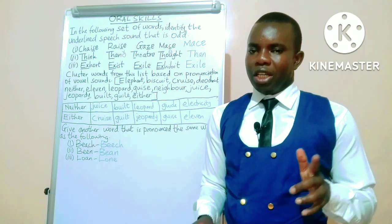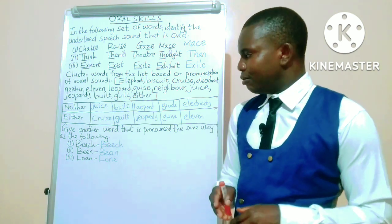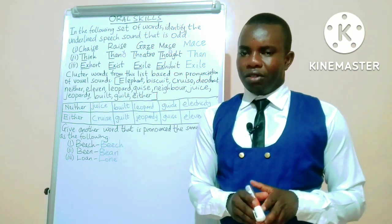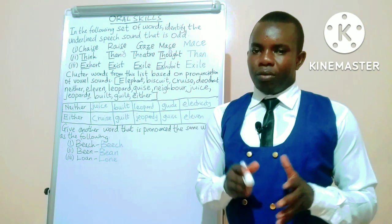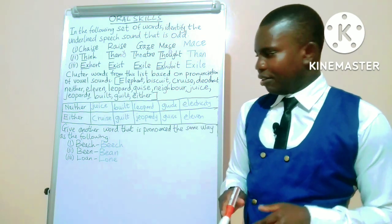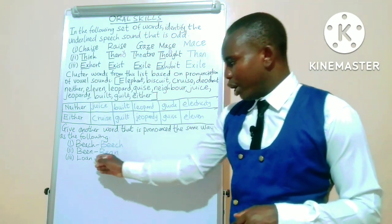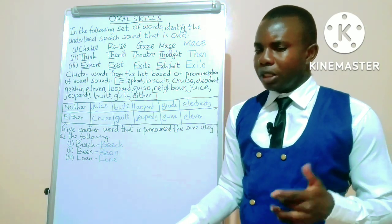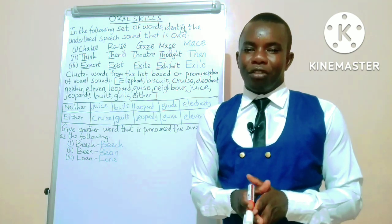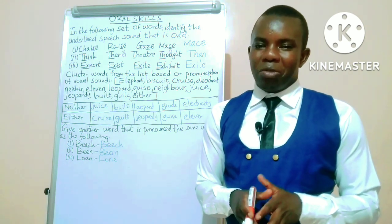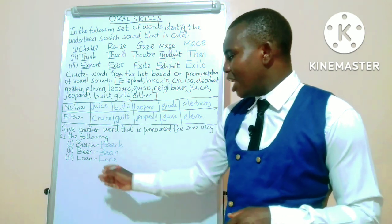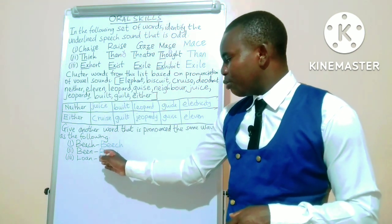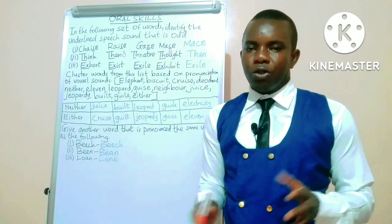We also have the word bean, which is spelled B-E-E-N, and that is pronounced the same as bean, the crop, B-E-A-N. Then lastly, we have the word lone, L-O-N-E, which is pronounced the same as alone, which is when someone is lonely, solo, or single.